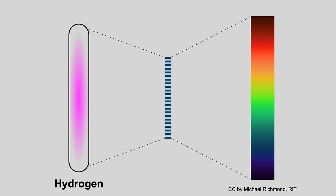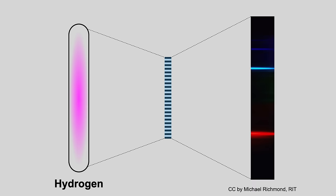If you send hydrogen light through a diffraction grating, instead of a rainbow, what comes out is a few lines. That's weird. How come?